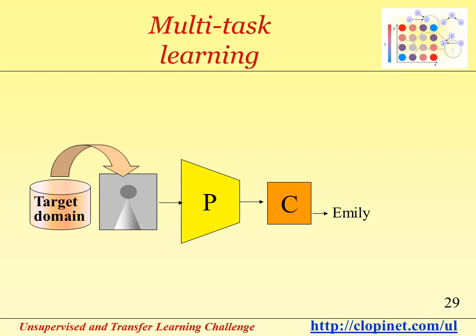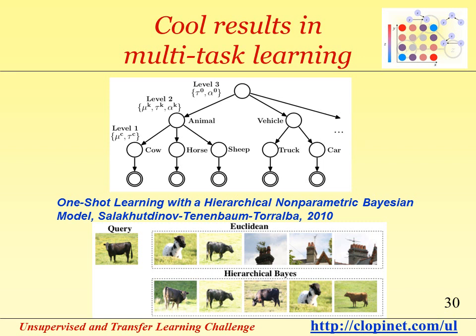It is understood that we have far fewer examples in the target domain, which is the domain that really interests us, so the hope is that by training jointly on examples from both domains we will get better at solving the task of interest in the target domain. This slide shows a hierarchical non-parametric Bayesian model used by Salah Koudikhoff and collaborators for transfer learning. Hierarchical models are particularly suitable for cross-task transfer learning: if you have a class with very few examples, such as cows, it may be helpful to learn a hierarchy of classes including animals. Using such a model trained on many animals, they were able to perform one-shot learning — learning the class of cows with a single training example.